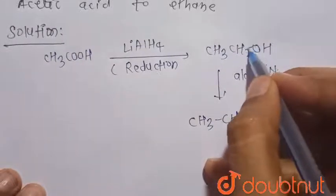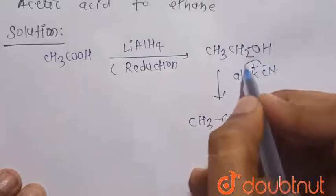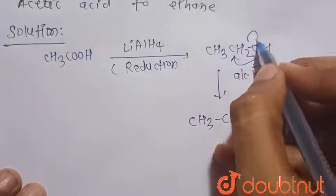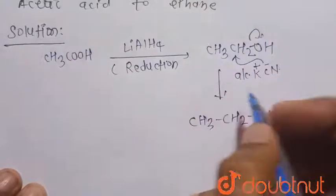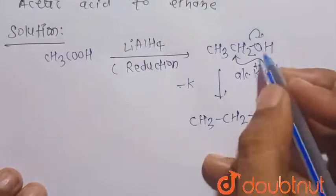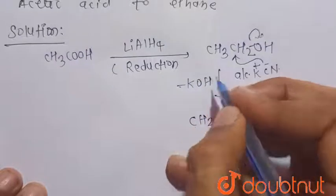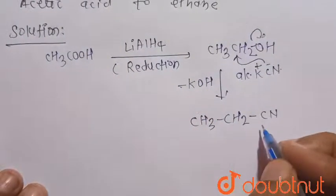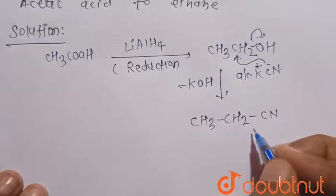That is, CN- will replace this OH-. This will attack this carbon and this bond breaks here. So K+ is combined with this OH-, so KOH is removed. So there is formation of CH3CH2CN.